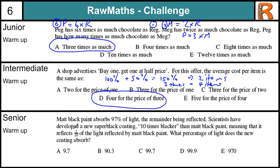Okay, the senior warm-up. Matte black paint absorbs 97% of light. The remainder is reflected. And then we've developed some paint that means it's ten times black, which means one-tenth of the reflected light is now reflected by the paint. Originally we had 97% of light absorbed, and 3% is reflected. Now this ten times better means that only a tenth of 3%, which is 0.3%, is now reflected. So if we are reflecting 0.3%, then we are left with 99.7%, which is C.